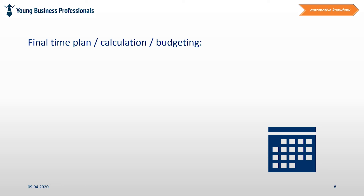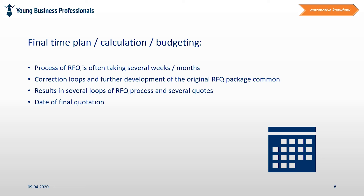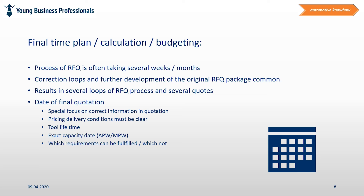Final time plan calculation and budgeting. The RFQ process often takes several weeks or months. Pretty often customers are still implementing new requirements that need to be reflected and evaluated. All that leads to several loops of the processes described before. Finally, this results in a final quotation in which all information will be summarized and provided to the customer. In the final quotation, the following information is very important: pricing and delivery conditions must be clear, the tool life should be mentioned as well as the exit capacity date and the average volume per week. It should also be clearly stated which requirements can be fulfilled and which cannot.